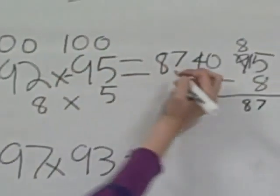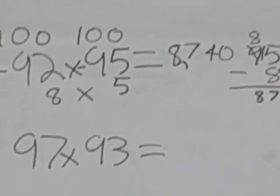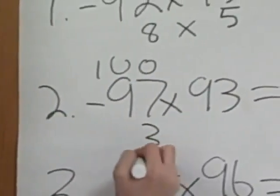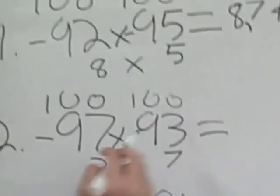So the first answer is 8740. Now I'm going to do this again. 100 minus 97 is 3. 100 minus 93 is 7.